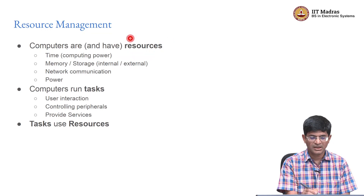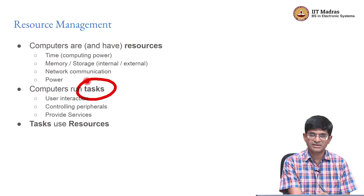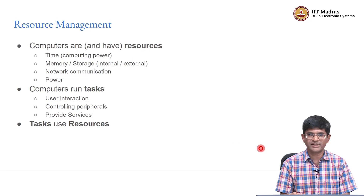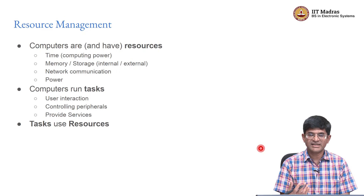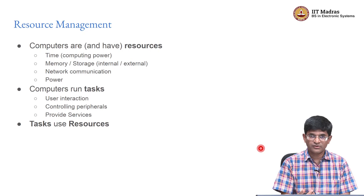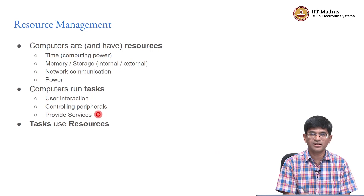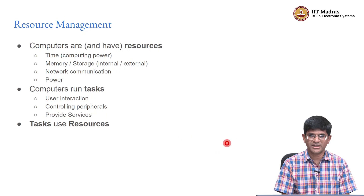To sum it up, computers have resources and computers run tasks. These tasks could be something as simple as user interaction — waiting for a user to type on a keypad, move a mouse, or touch a touch screen — and correspondingly showing something on a display, whether it is a single LED, a seven segment display, an LCD, or a full blown active matrix OLED like the kind in modern phones. In addition to that, there are peripherals that need to be controlled.